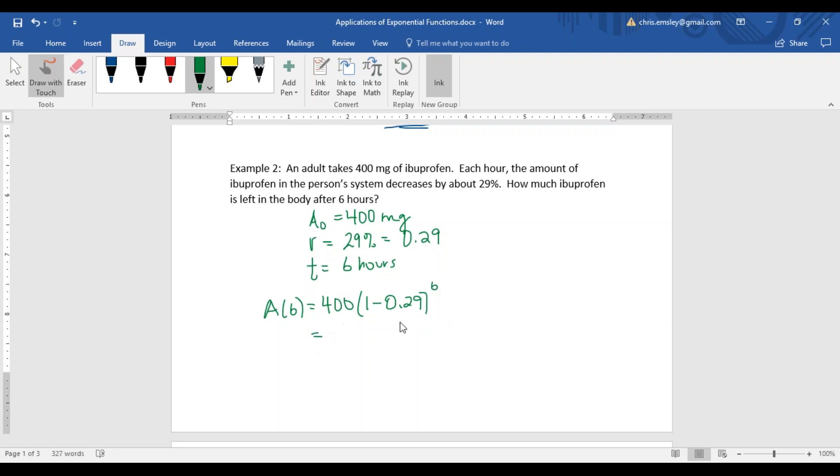Once you have this formula, it's calculator work. Make sure you're using your exponent button, not your multiplication button for that 6. And it turns out that it's 51.2 milligrams.